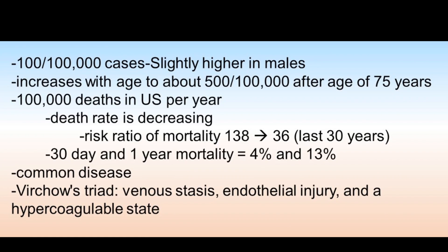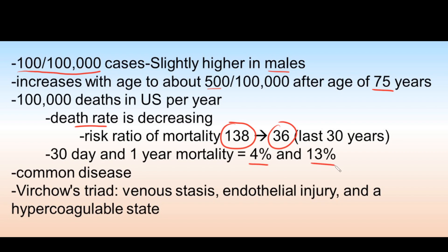In terms of epidemiology, we see pulmonary embolism in about 100 out of 100,000 cases, slightly higher in males, and the risk increases especially after age 75. There are about 100,000 deaths per year in the United States, although the death rate is decreasing as we get better at detecting and treating it. The risk ratio has gone from 138 down to about 36 in the last 30 years, with 30-day mortality at 4–13%.